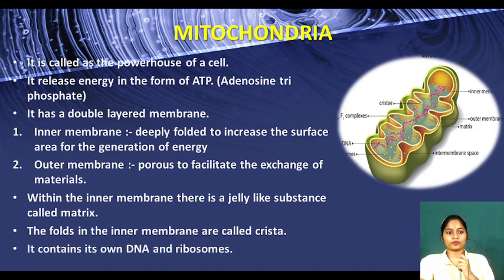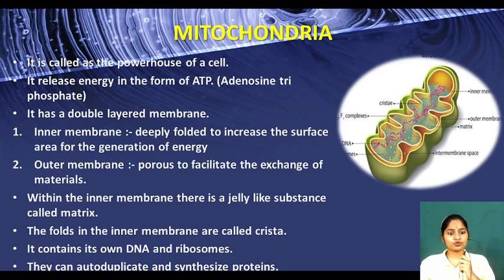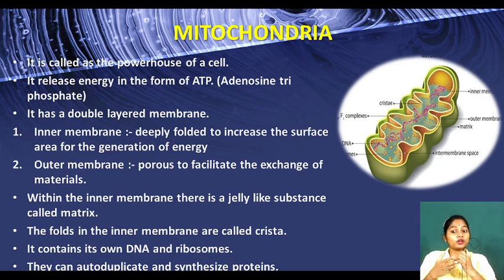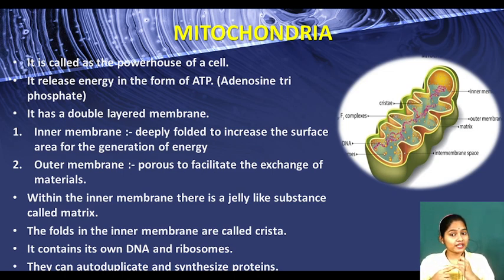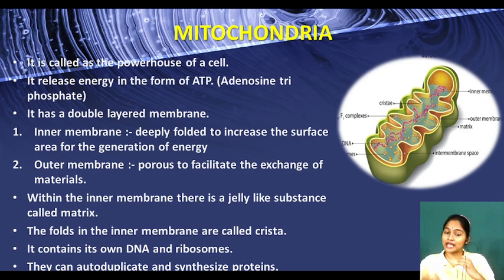Mitochondria contain their own DNA and ribosomes, making them independent. They can auto-duplicate and synthesize proteins. Because mitochondria have their own DNA and ribosomes, they don't depend on any other organelle. For example, during heavy exercise the body needs more energy, so more mitochondria are needed. Mitochondria will auto-duplicate — increase their number on their own — because they have their own DNA and ribosomes to help in protein synthesis.